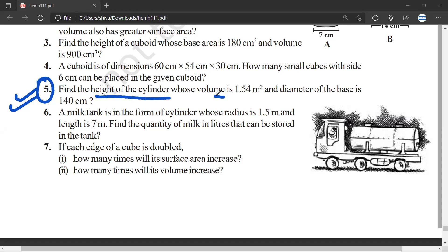Find the height of the cylinder whose volume is 1.54 meter cube and diameter of the base is 140 centimeter. So let us first draw the rough diagram of this figure so that we understand what is given and what is required. We need to find the height.